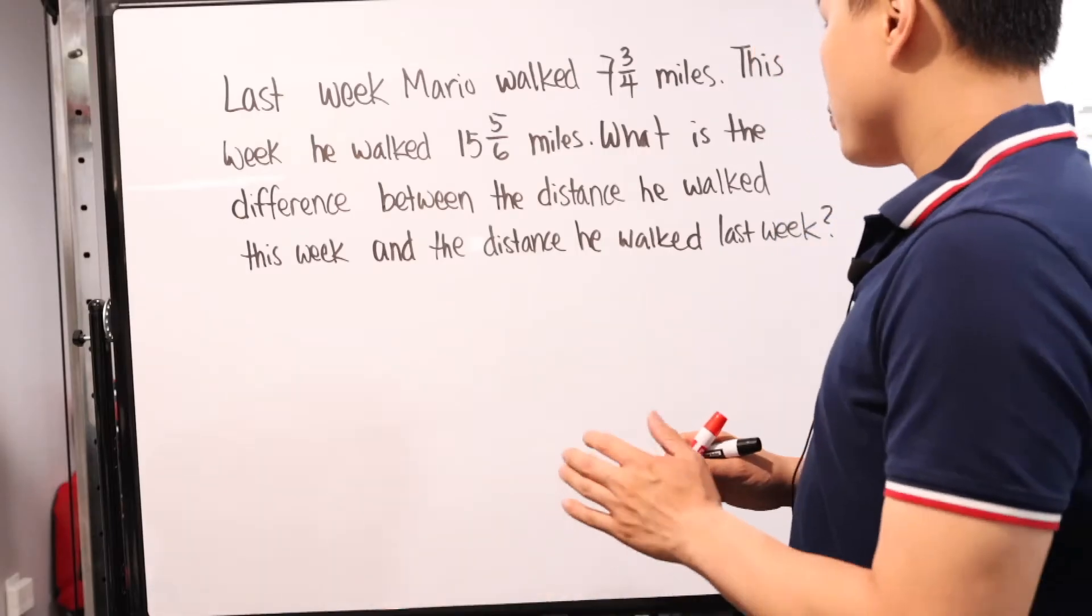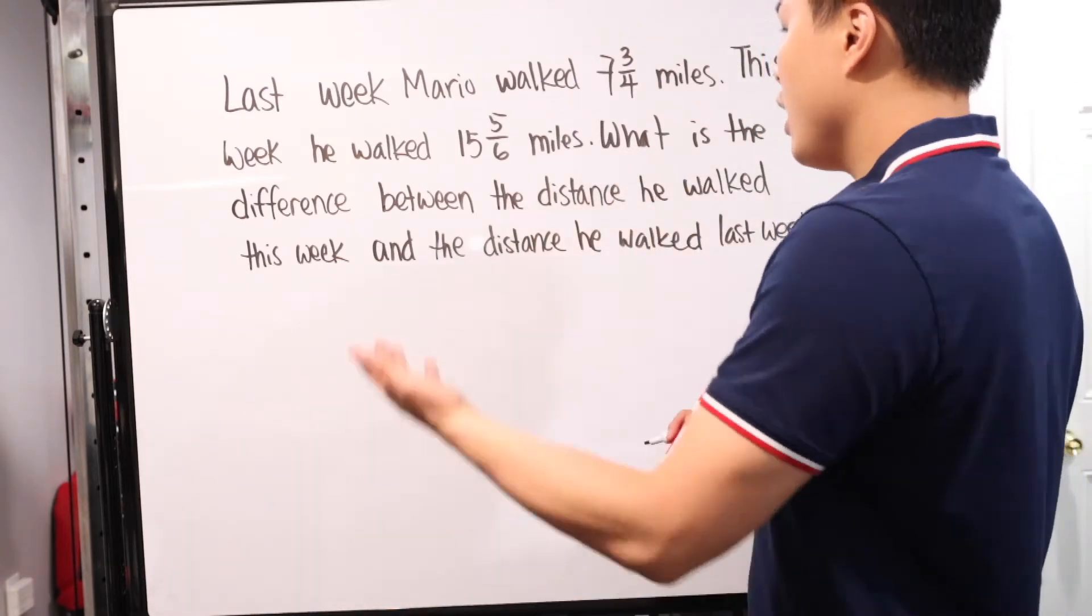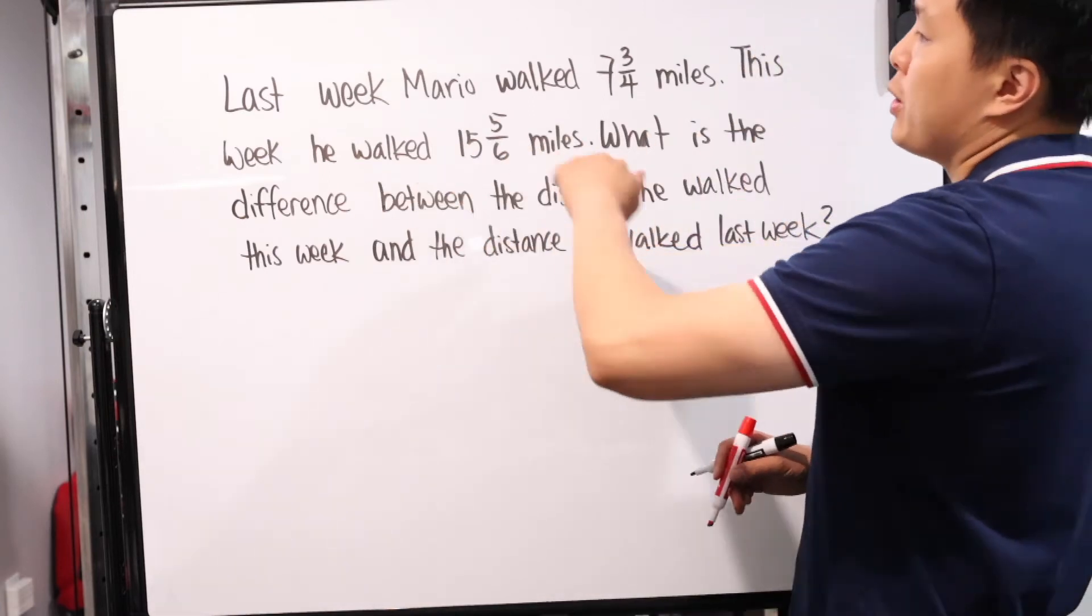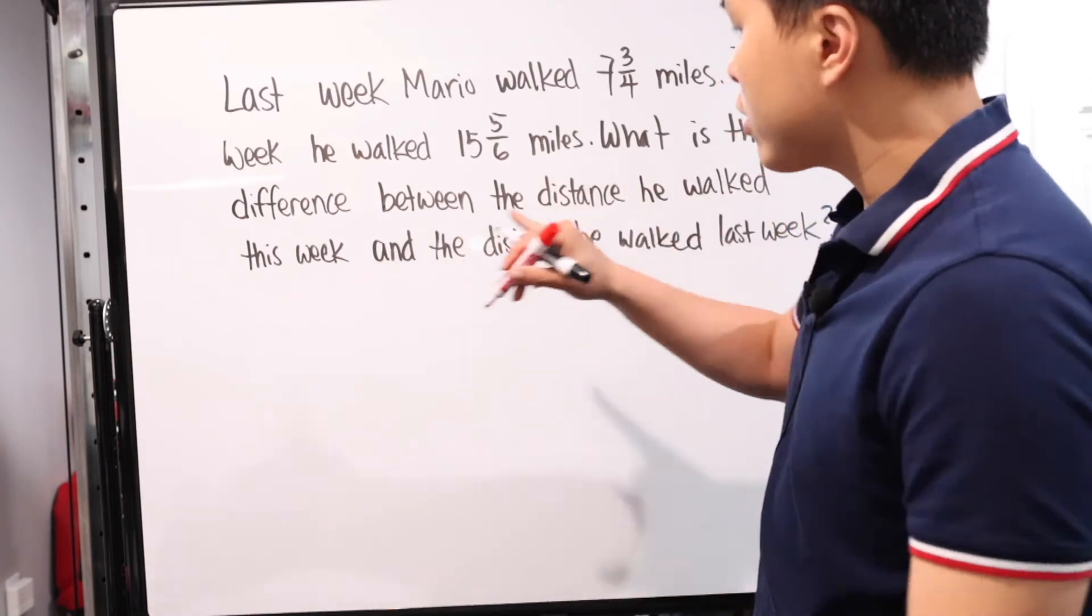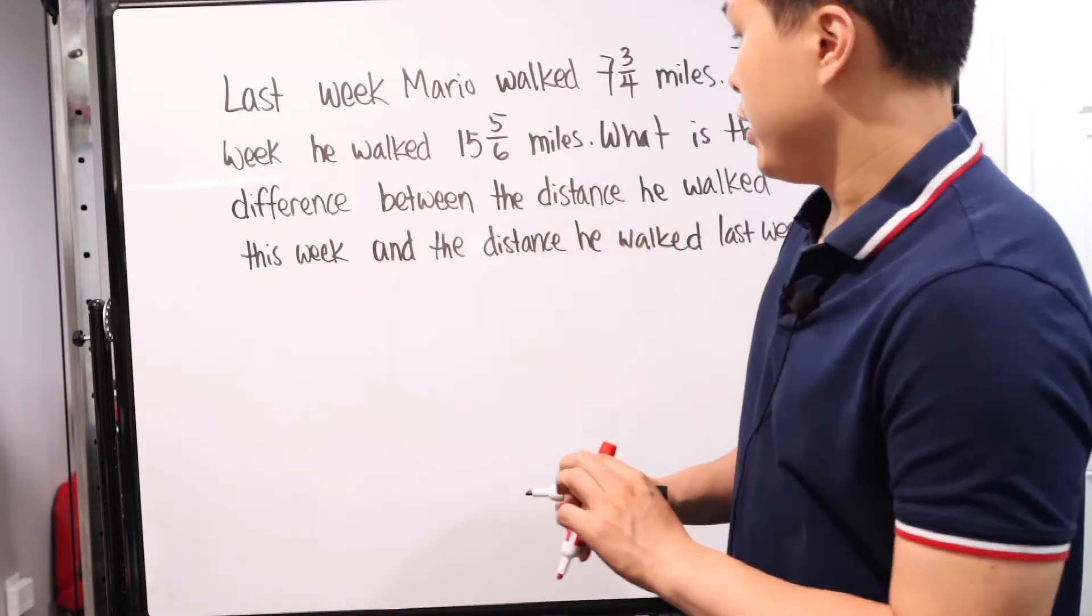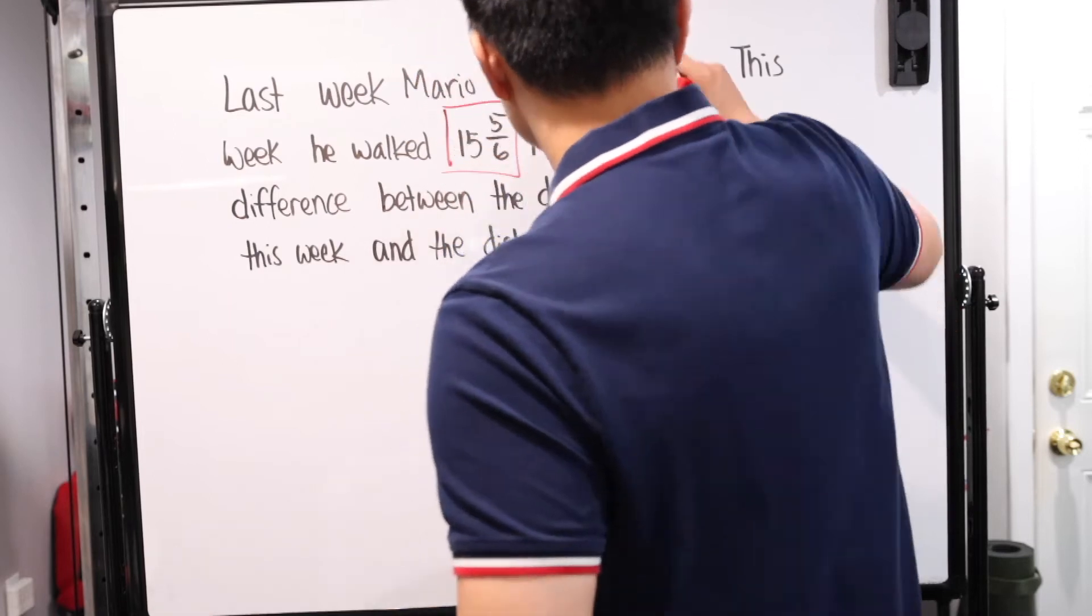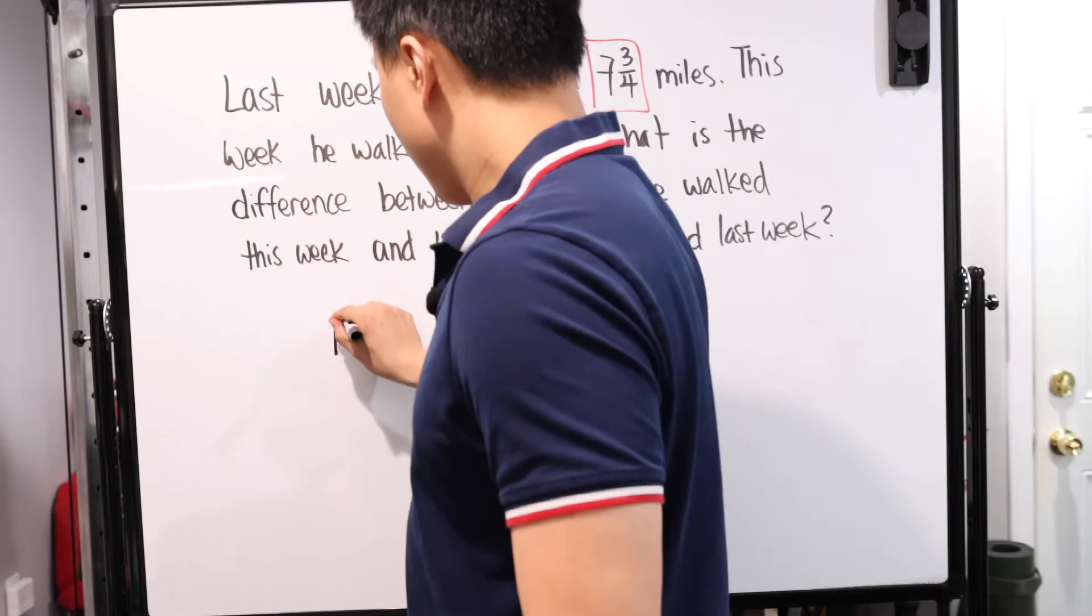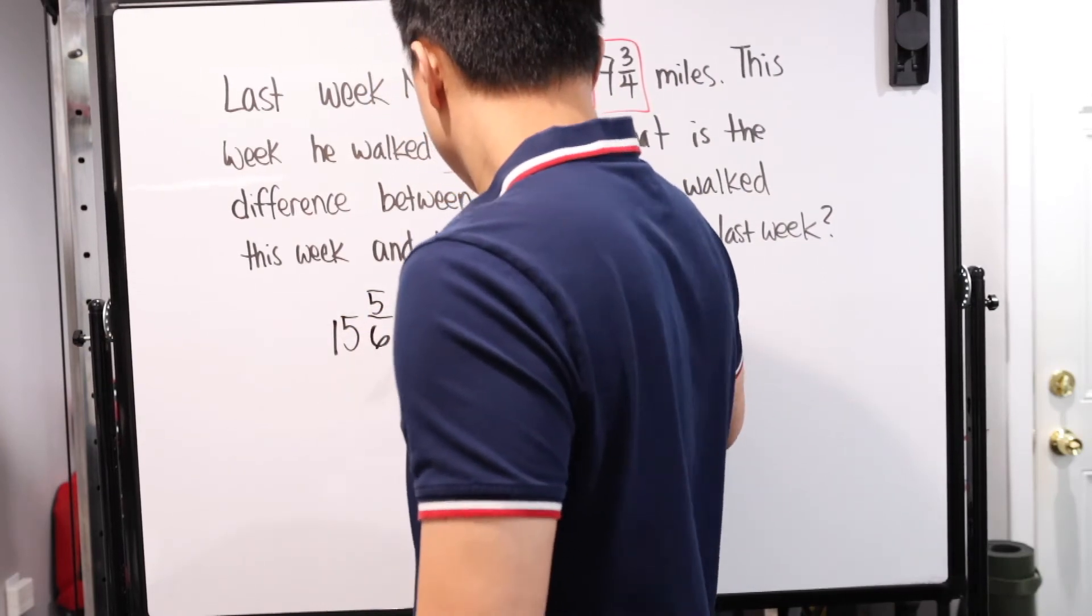Our last problem of the day. We have this one, clearly a fraction problem. Let's see what it's asking. Last week, Mario walked 7 and 3/4 miles. This week, he walked 15 and 5/6 miles. What is the difference between the distance he walked this week and the distance he walked last week? Plain and simple, subtraction. We have two fractions: 15 and 5/6 and 7 and 3/4. We're just gonna subtract these two.